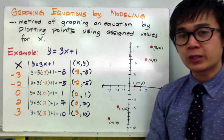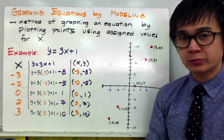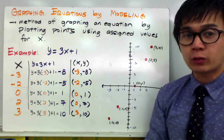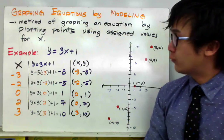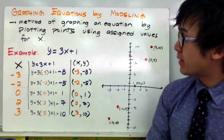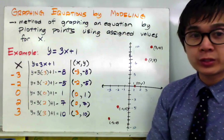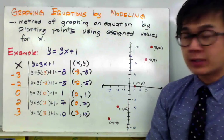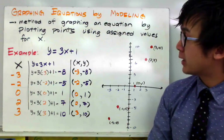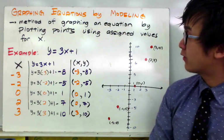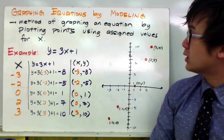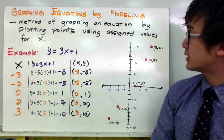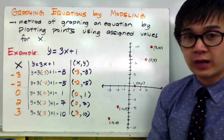One of the basic skills that we need to learn in algebra is how to graph an equation. The method that we're going to use in graphing an equation is what we call modeling. Modeling is basically a method of graphing an equation by plotting points using the assigned values for x.